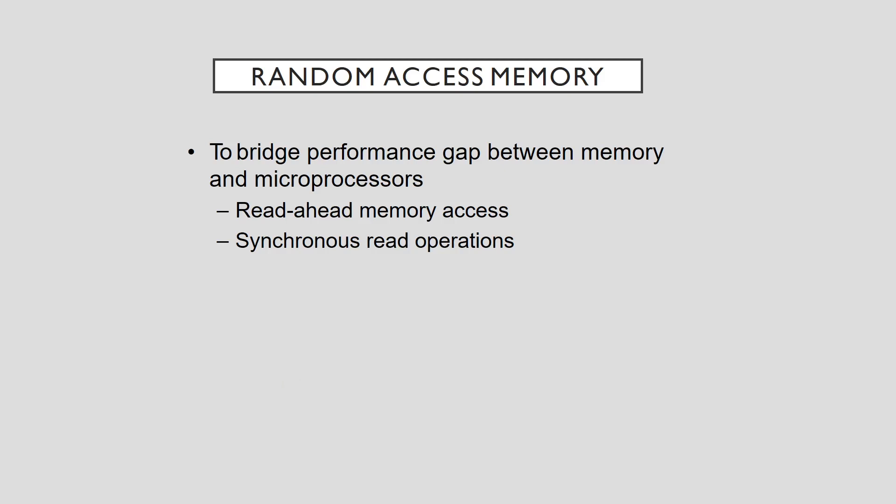RAM is used to bridge the performance gap between memory and microprocessors. It features read-ahead memory access and synchronous read operations. Computer memory contains more than just SRAM or DRAM circuits; memory circuits are grouped in modules containing tens or hundreds of megabytes. Each module contains additional circuitry to implement read and write operations at random locations, and that circuitry must be activated before data can be accessed.